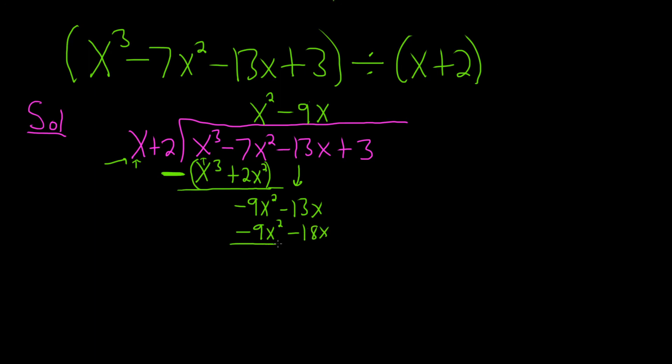Draw a line, giant parentheses, big giant minus sign, and then you add. Negative 9x squared plus 9x squared, right? That's going to become a plus because it's a double negative. It's 0. Negative 13x plus 18x is 5x. Then you bring down the 3.